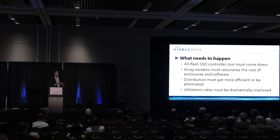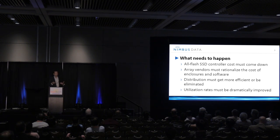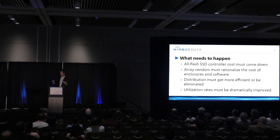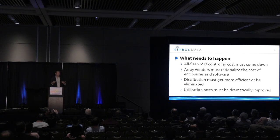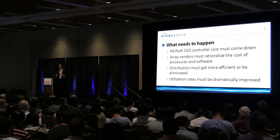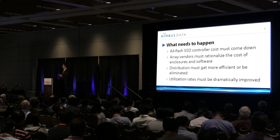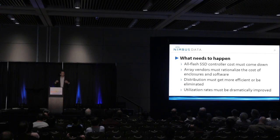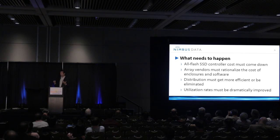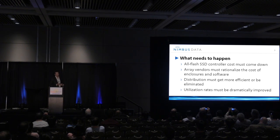Next, the array vendors themselves need to rationalize the cost of their frames. They're used to pushing big boxes with a lot of complexity. All-flash arrays are beautiful because they're simple and elegant — you don't need to tier data, you don't need to migrate data, you simply have consistent, predictable latency. Now is the time to rationalize the cost of the array structure itself. It can't be $5 per gig of structure in order to enable $0.40 per gig of NAND.